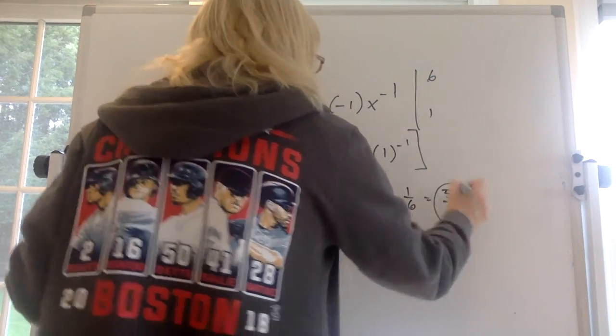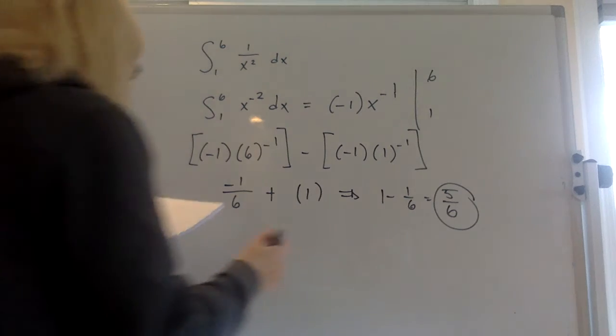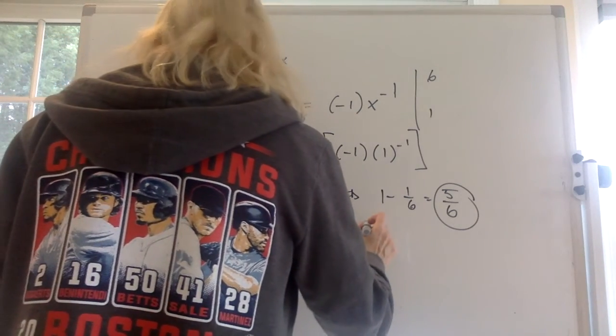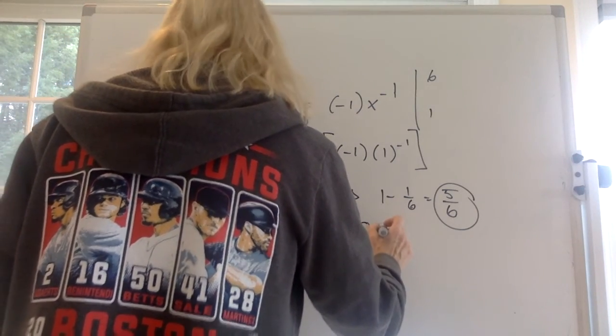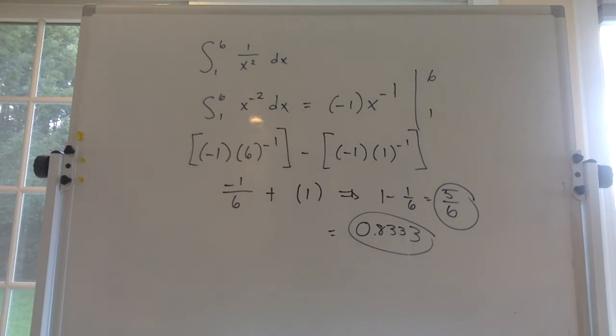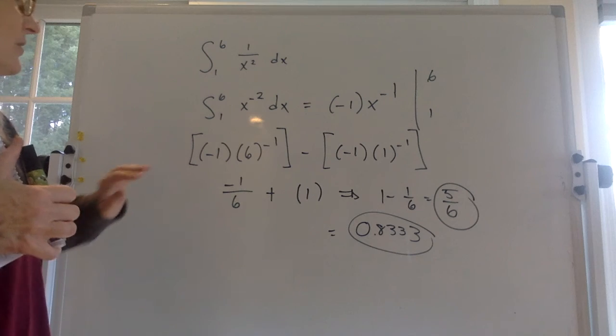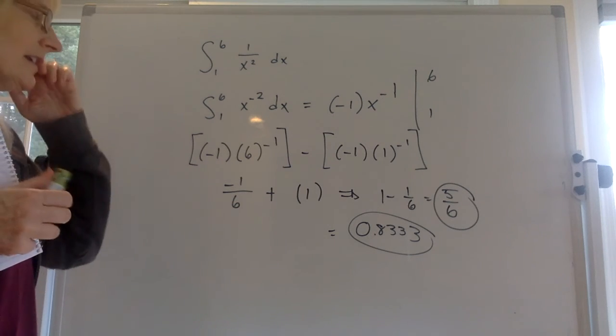We just rewrote it. And if they ask you, they might ask you for this in a decimal form. 5 sixths is 0.8333, I don't know how many decimal points they want. So that's all. The key there is to rewrite the fraction as x to the negative 2 and plug everything in, and I think you're good.